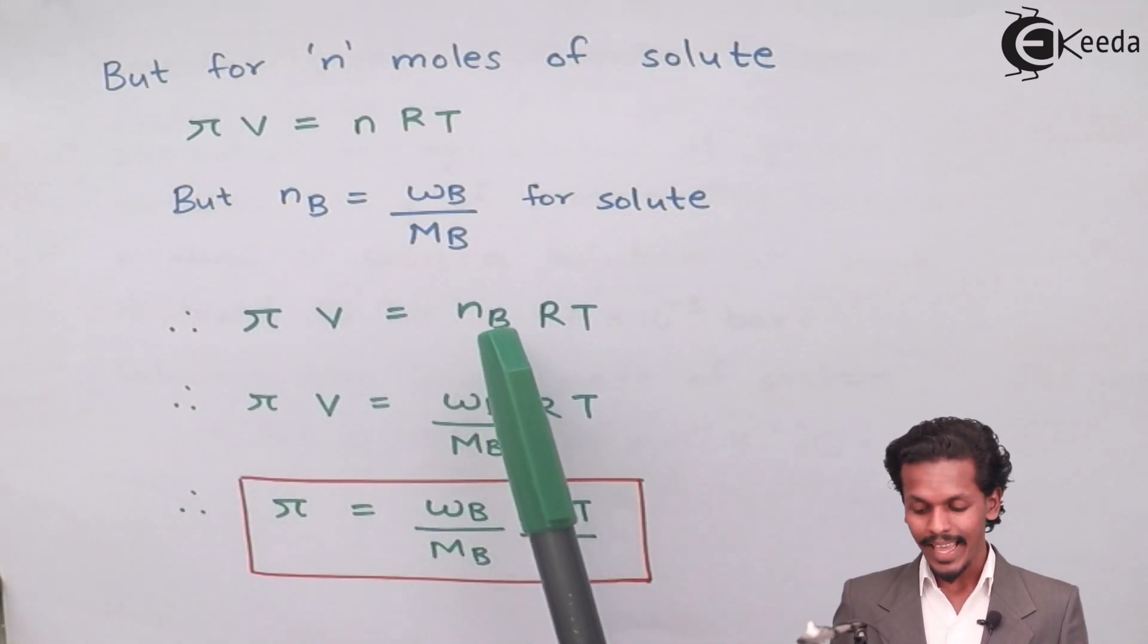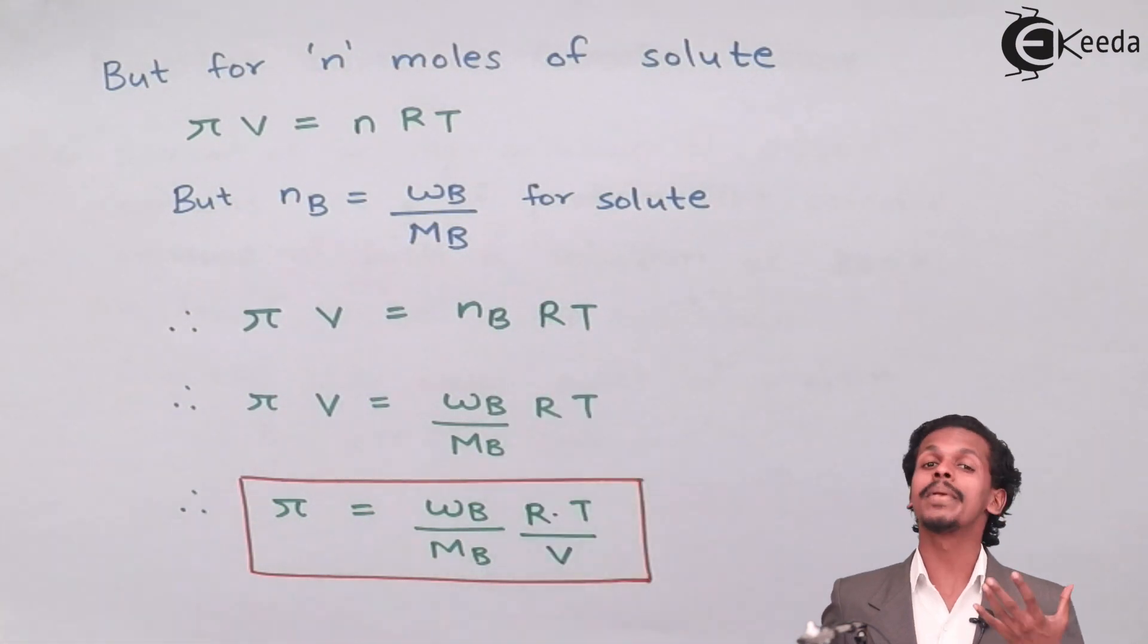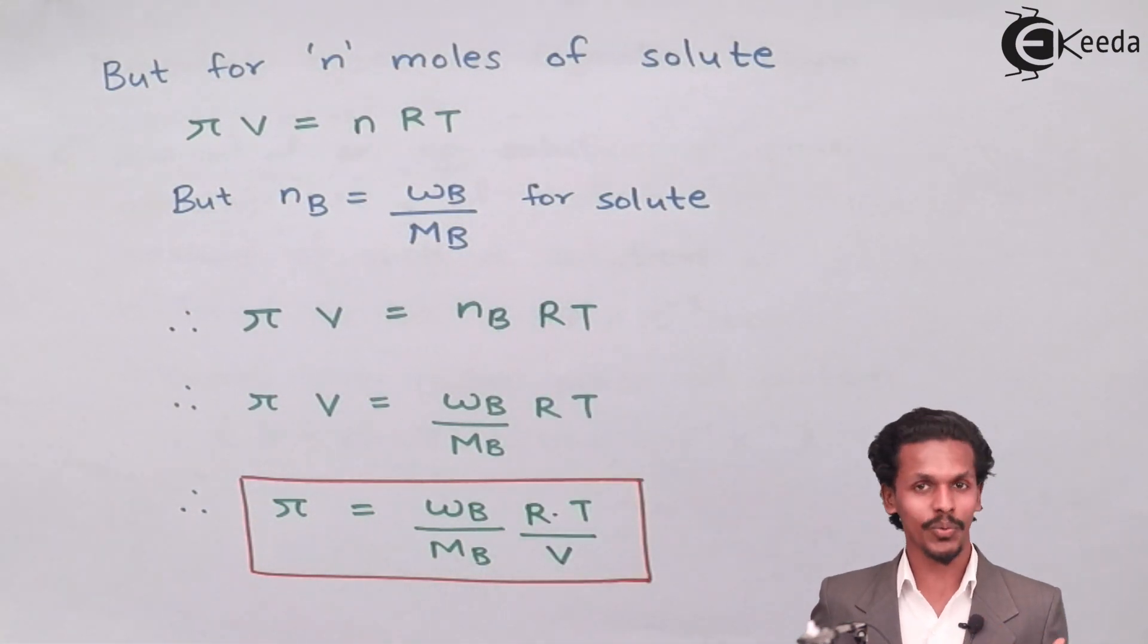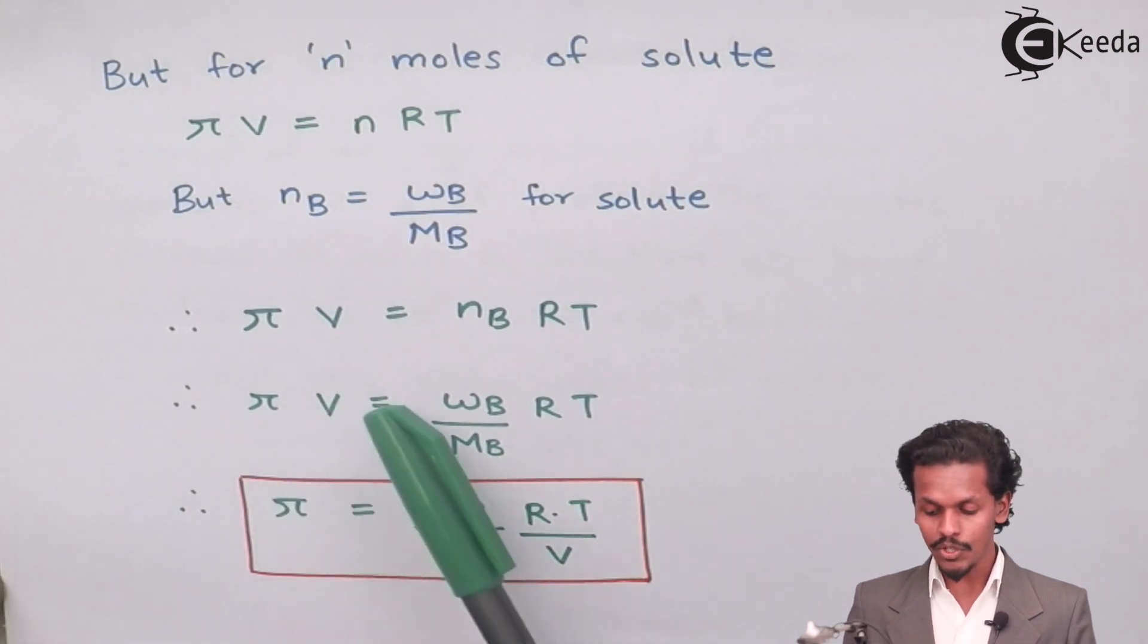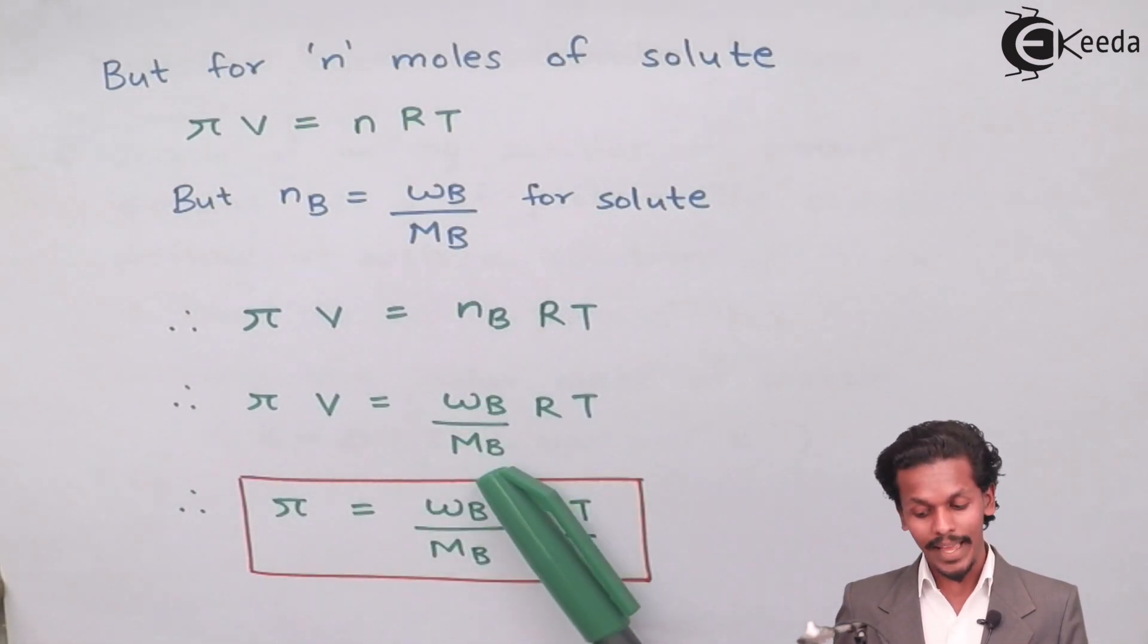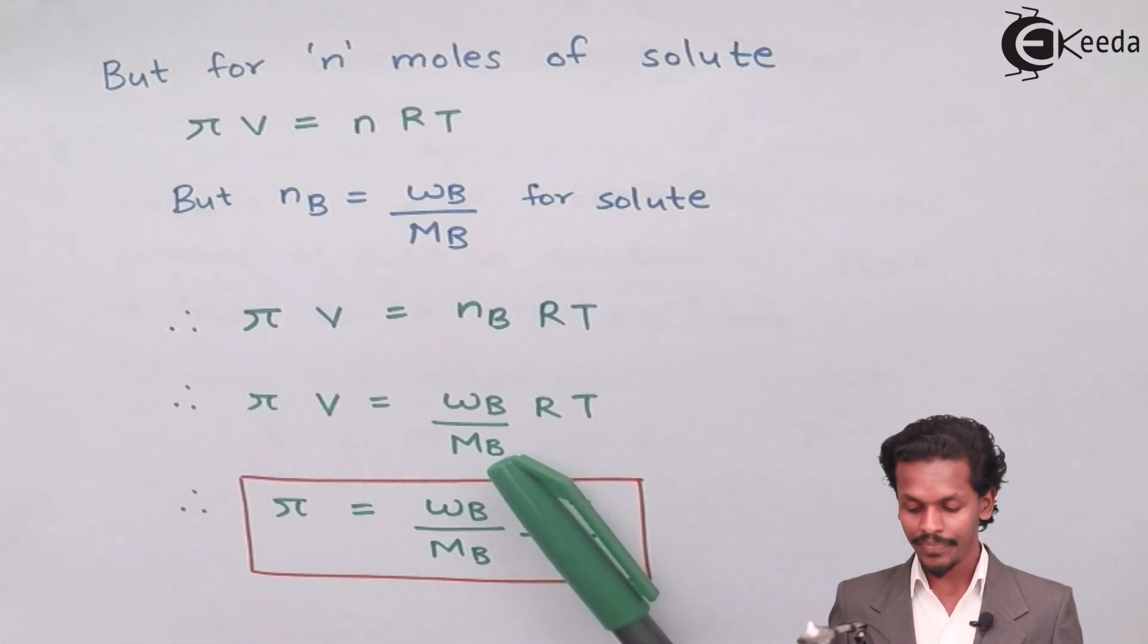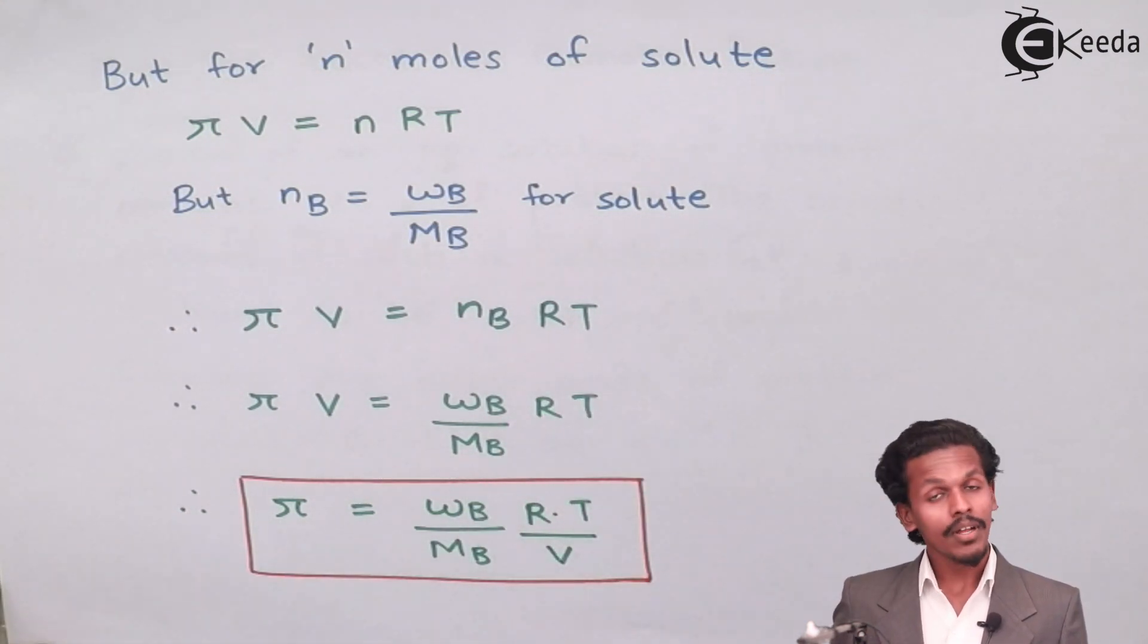We will write this equation as πV equals nB times RT, where nB stands for number of moles of solute. By equating this equation, πV equals WB divided by MB, which stands for nB, into RT.